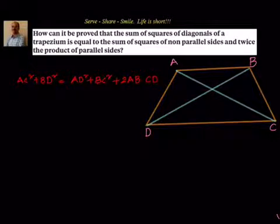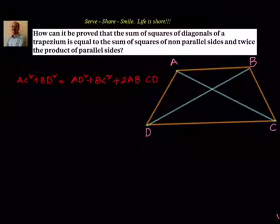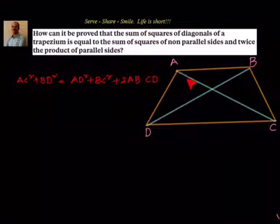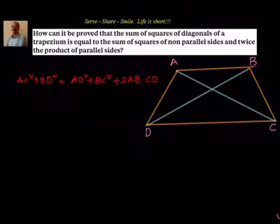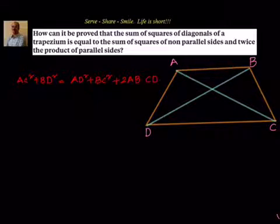Hello friends, welcome back, hearty welcome to you. As one of the students requested, I am just trying to provide the proof for this. So let's go ahead with this proof — how it can be proved that the sum of squares of diagonals of a trapezium is equal to the sum of squares of non-parallel sides and twice the product of parallel sides.